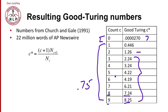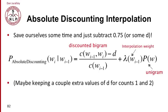And that intuition of a fixed small discount can be applied directly. When we do this, we call this absolute discounting. And absolute discounting is a popular kind of smoothing. And here we're showing you absolute discounting interpolation. And again, the intuition is just we'll save some time and not have to compute all those complicated Good-Turing numbers, and we'll just subtract 0.75, or maybe it'll be a different discount value for different corpora.